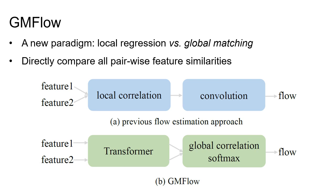Given that Optical Flow is very useful, we propose GMFlow, a new global matching-based paradigm for learning Optical Flow. More specifically, previous Optical Flow methods have been dominated by the pipeline of regressing Optical Flow from local correlations with convolutions, which is inherently limited to the local range and thus is hard to address the longstanding challenge of large displacements.